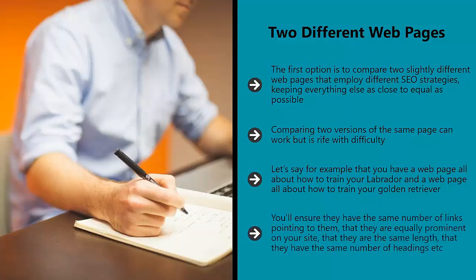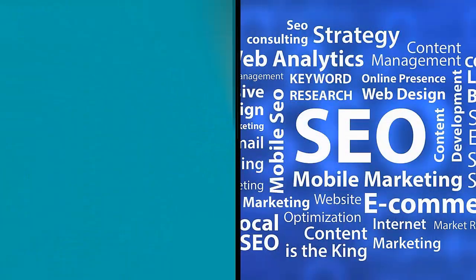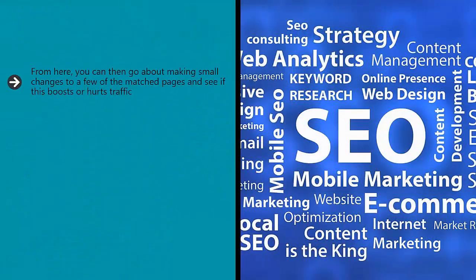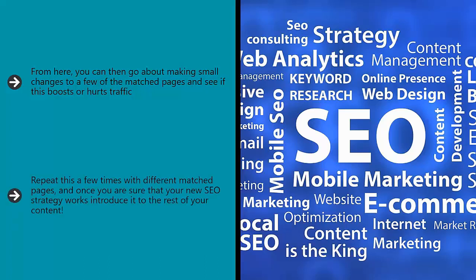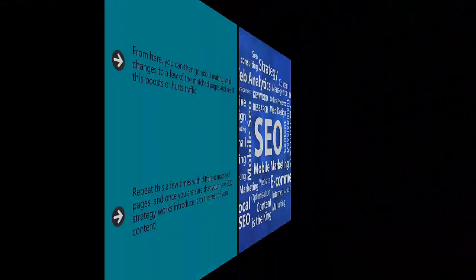You'll ensure they have the same number of links pointing to them, that they are equally prominent on your site, that they are the same length, that they have the same number of headings, etc. From here, you can then go about making small changes to a few of the matched pages and see if this boosts or hurts traffic. You'll then watch the difference in your stats, making sure to collect as much data as possible. Repeat this a few times with different matched pages, and once you are sure that your new SEO strategy works, introduce it to the rest of your content.